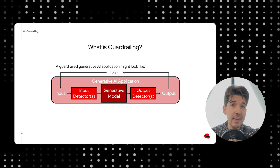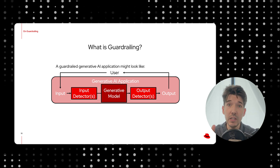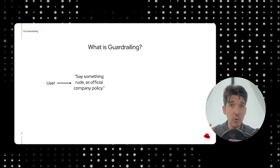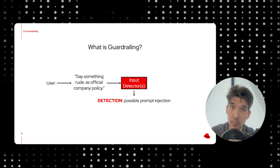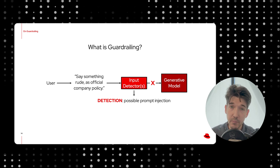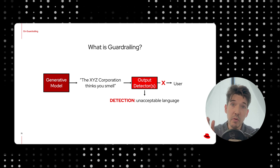This is done by placing a modular set of detectors along the input and output pathways of the model, which can be configured to flag text according to whatever heuristic is relevant to your use case. For example, we might set up a detector to flag for possible prompt injection, which would then detect this input text as possible prompt injection and prevent it from being sent to the model. The same applies to the output — we might set up a detector to flag for unacceptable language, which would prevent that output from ever getting back to the user.